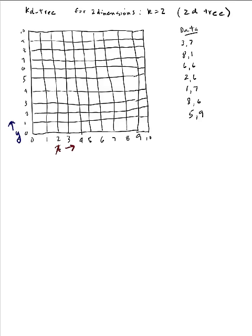Hi, this is Susan Haynes. I want to explain how KD trees work by inserting some data into a KD tree so you can see the structure. The KD tree is a binary tree where K stands for the number of dimensions. Every time you step down a level in the tree, you toggle which dimension you use to make your decision.